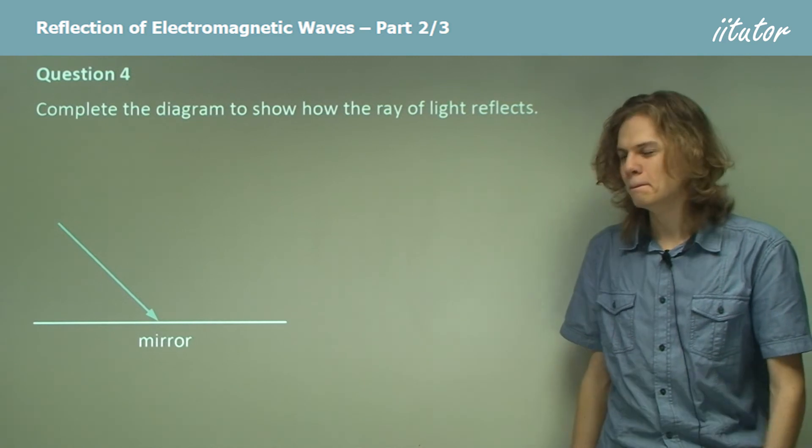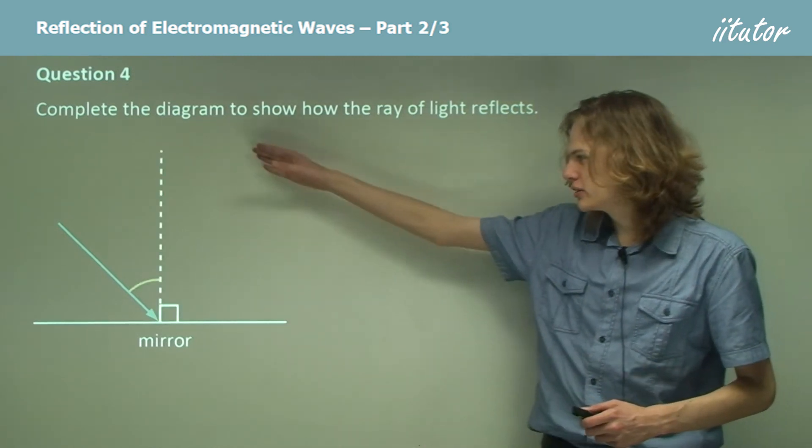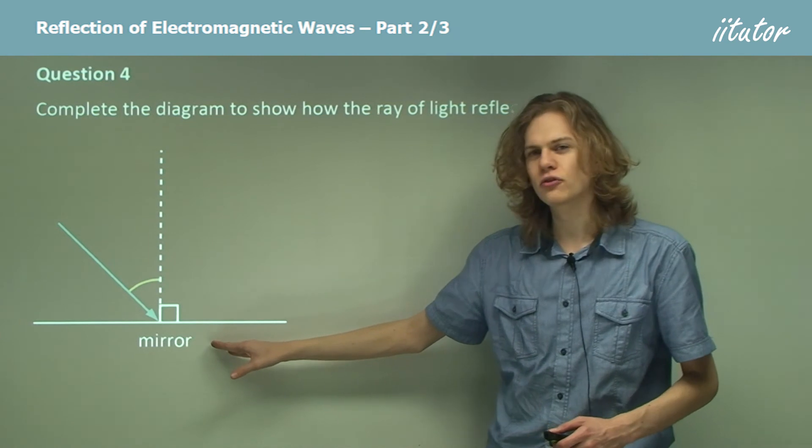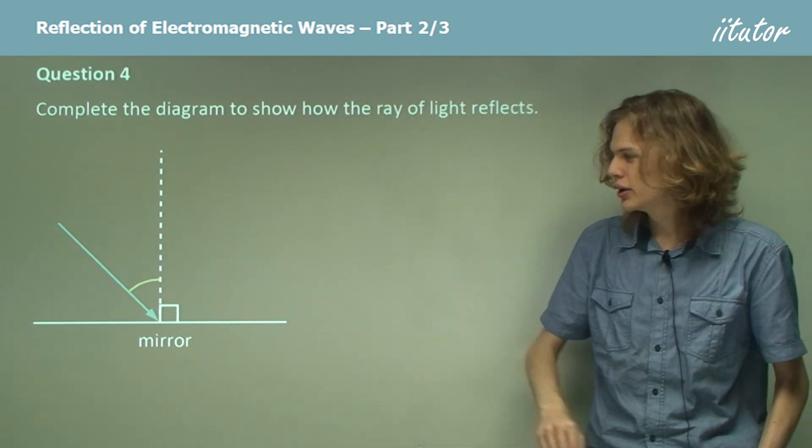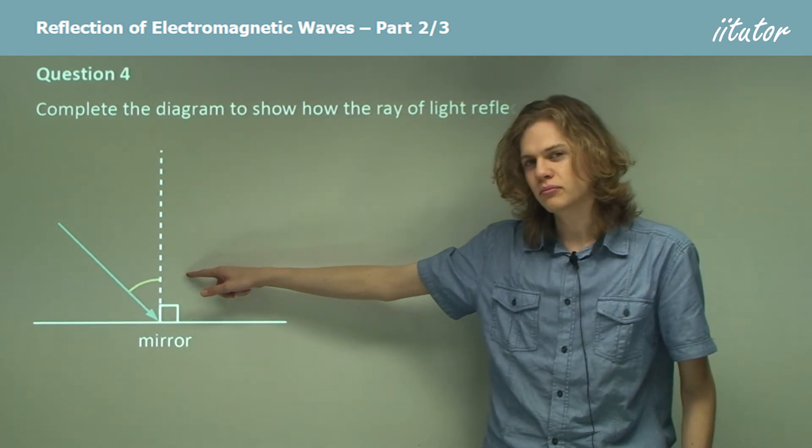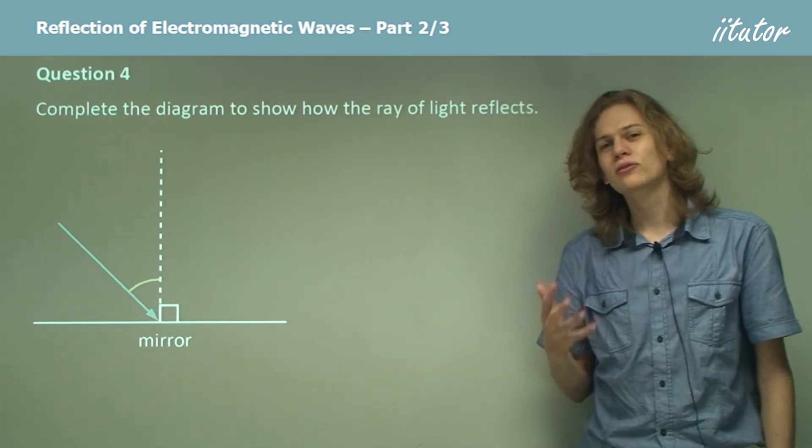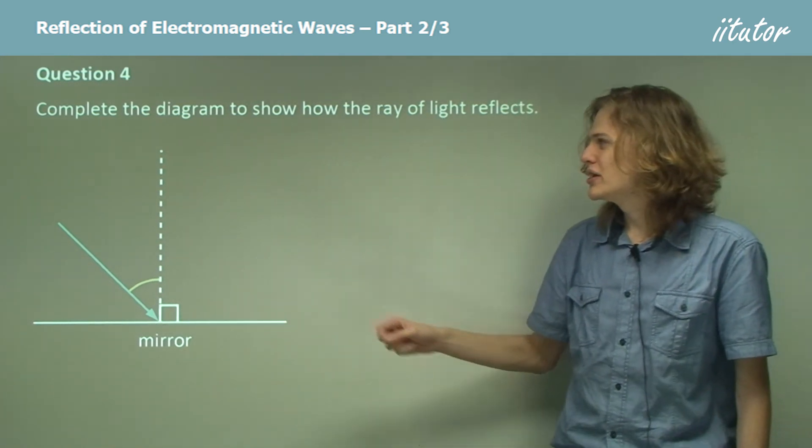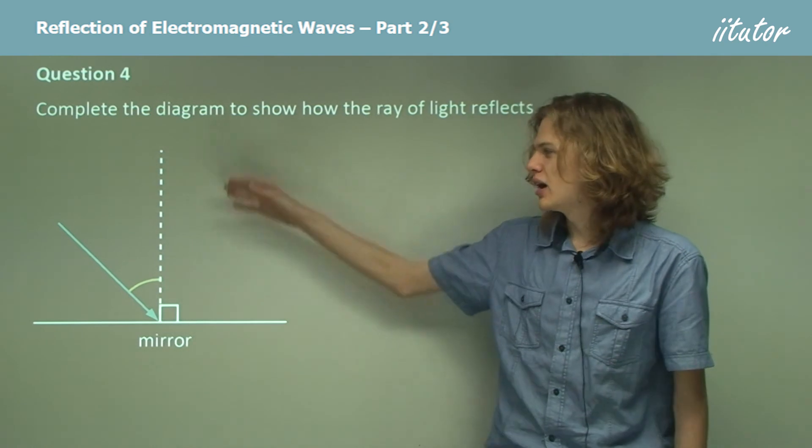So let's do that now. We draw a line that's perpendicular to the surface of the mirror that we're reflecting from. This angle inside, marked in yellow, is the angle of incidence between the incident ray and the normal.